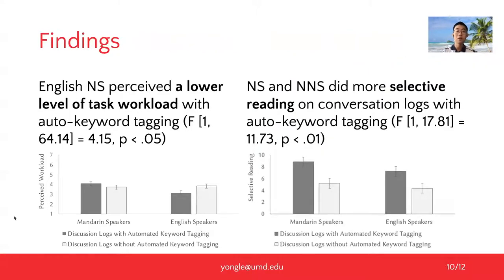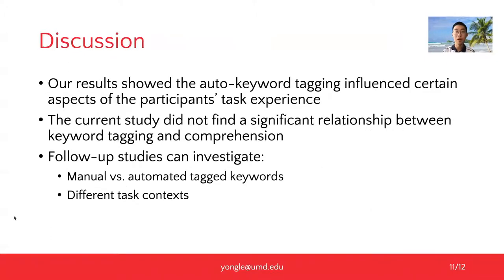For our findings, the self-reported data indicate native English speakers perceive a lower level of task workload, and the mouse movement activities suggested that both English and Mandarin speakers did more selective readings on conversation logs under experiment conditions. Our results suggested that auto-keyword tagging influenced certain aspects of the participants' task experience, such as task workload.